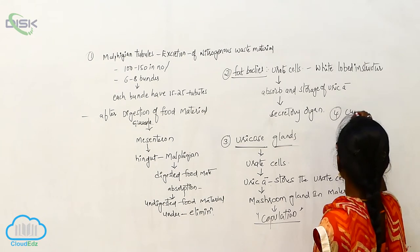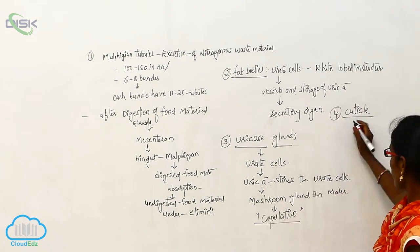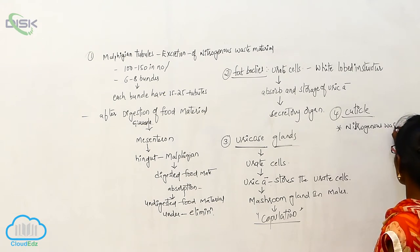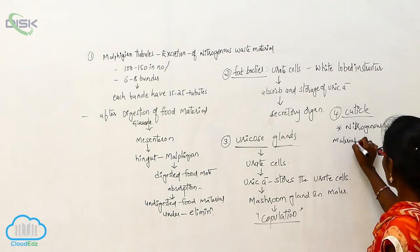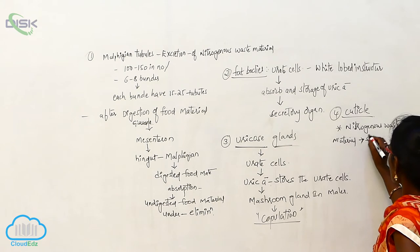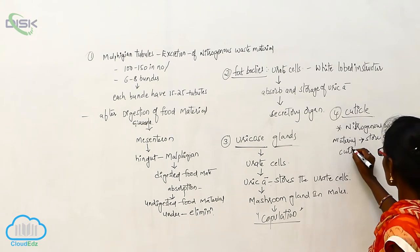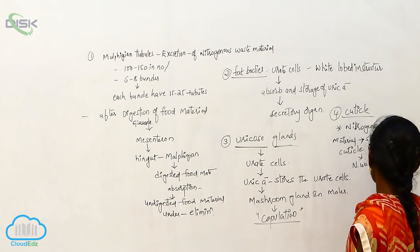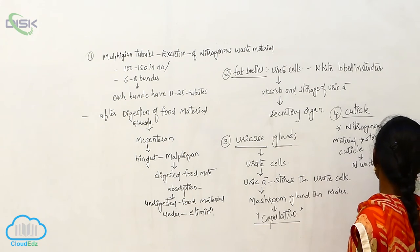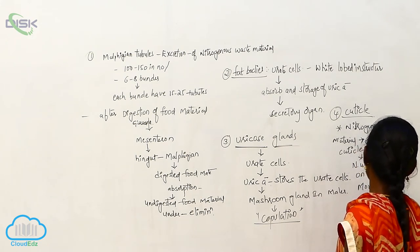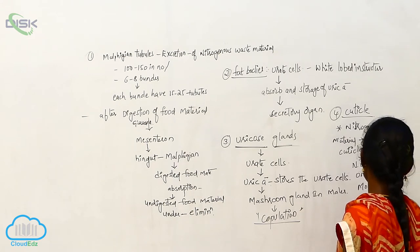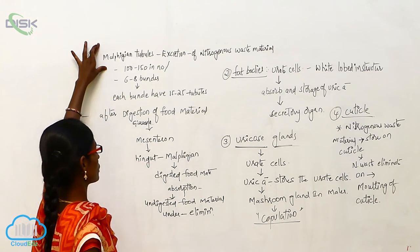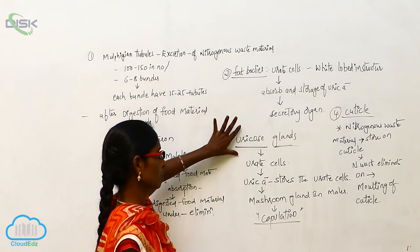The next excretory structure is the cuticle. The nitrogenous waste material is stored on the cuticle, and that nitrogenous waste material is eliminated during the moulting of the cuticle. So there are four structures involved in excretion: Malpighian tubules, fat bodies, uricose glands, and cuticle.